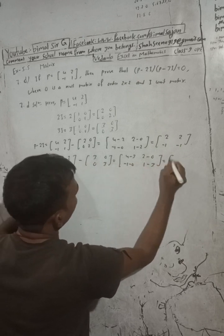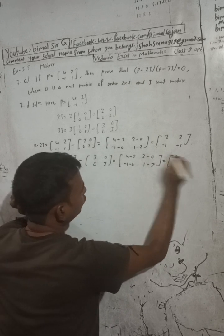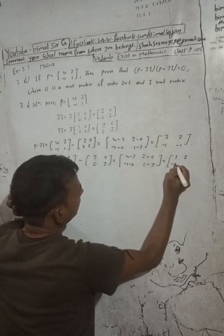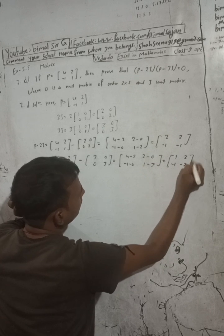This gives us 4 minus 3 equals 1, 2 minus 0 equals 2, minus 1 minus 0 equals minus 1, and 1 minus 3 equals minus 2.